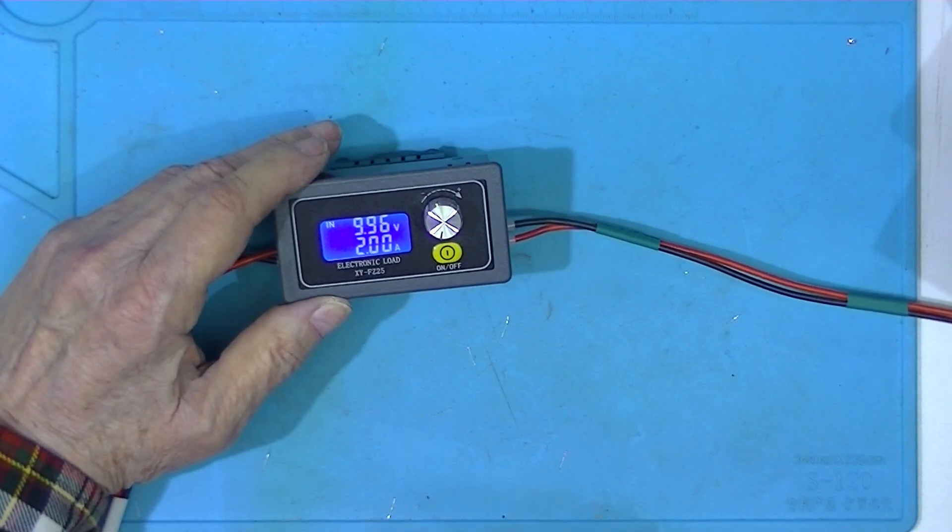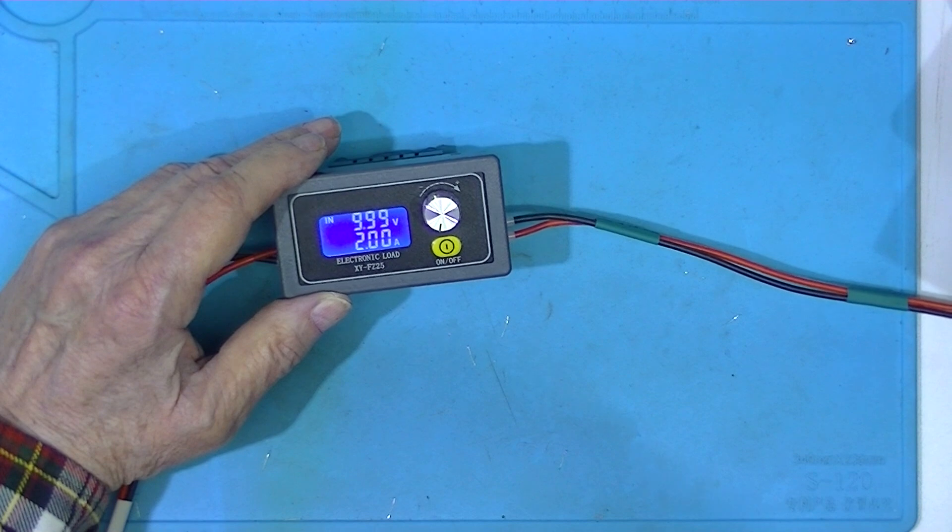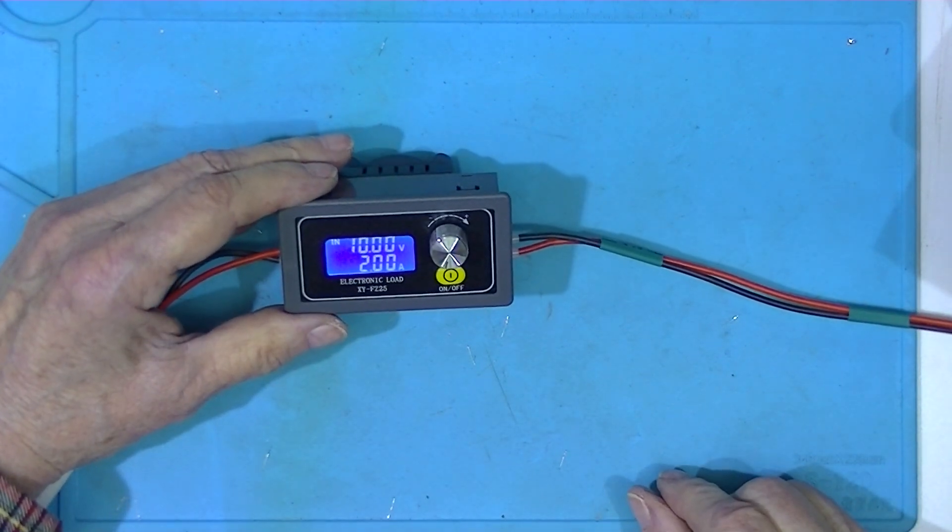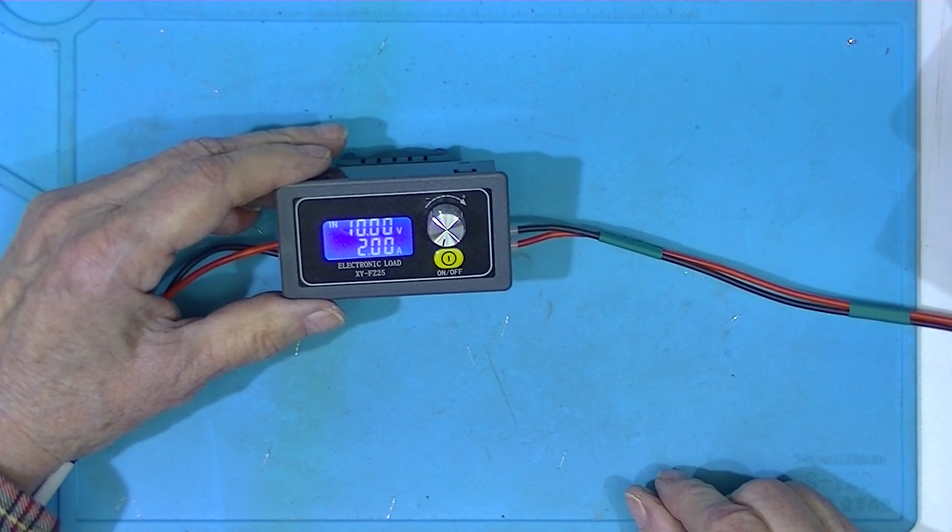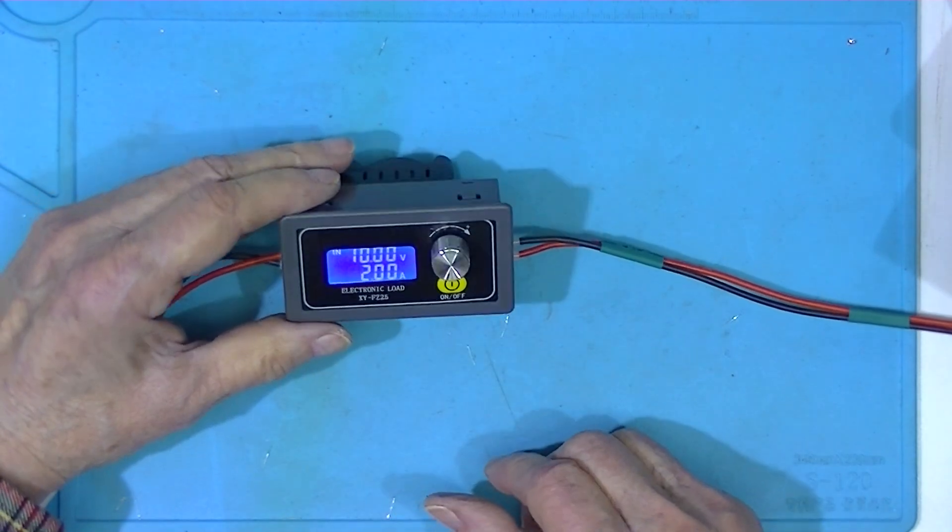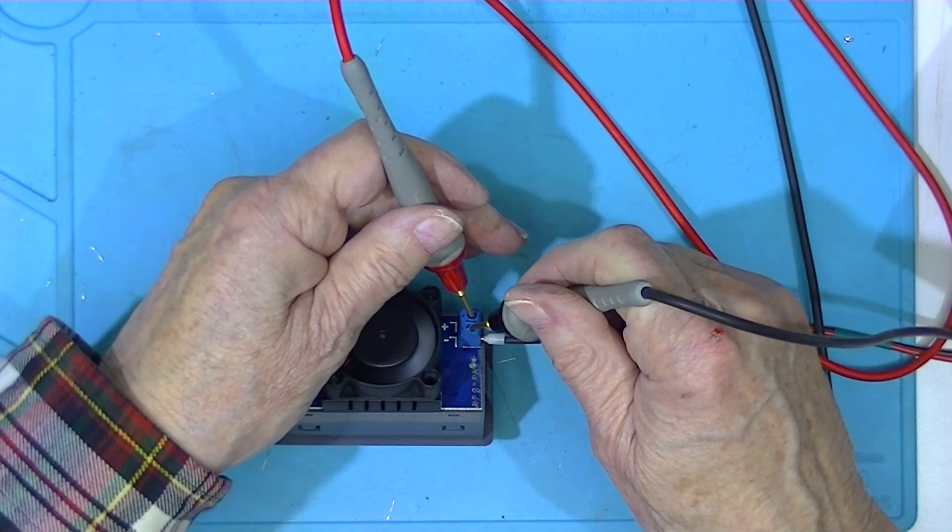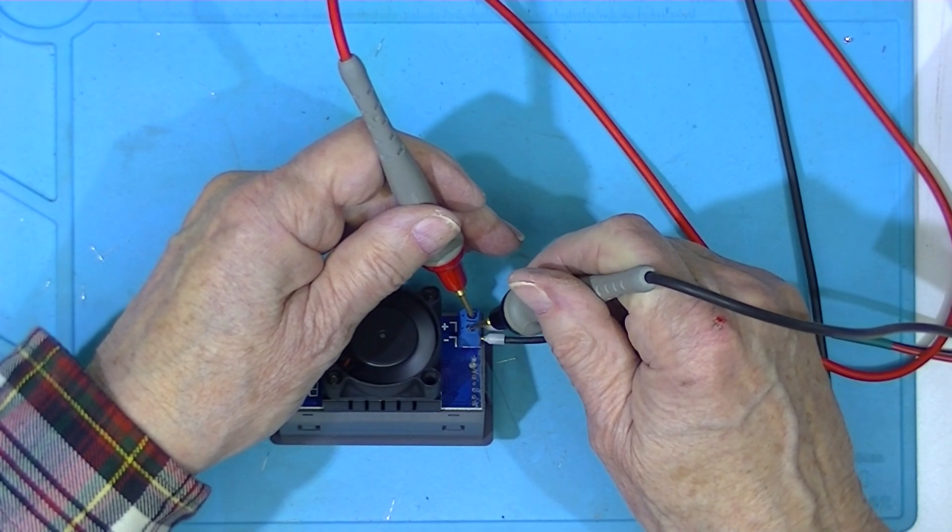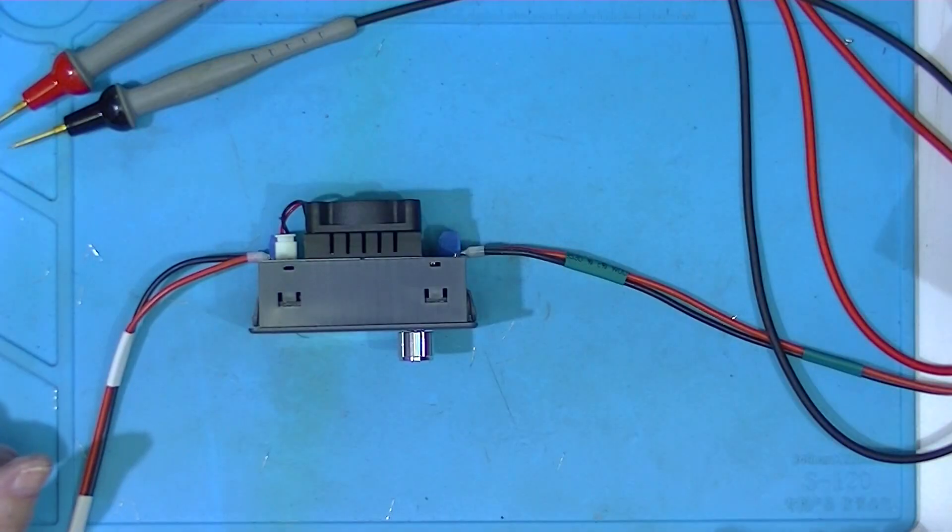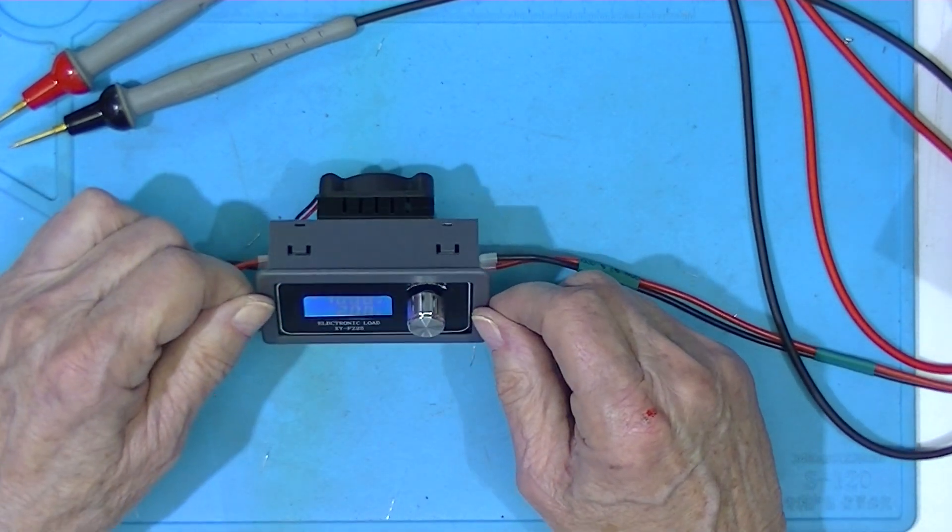I'm going to fine adjust my power supply again to bring it up to 10 volts. So now we're dissipating here 20 watts. I'll take the bench meter. It says 10.014 volts.